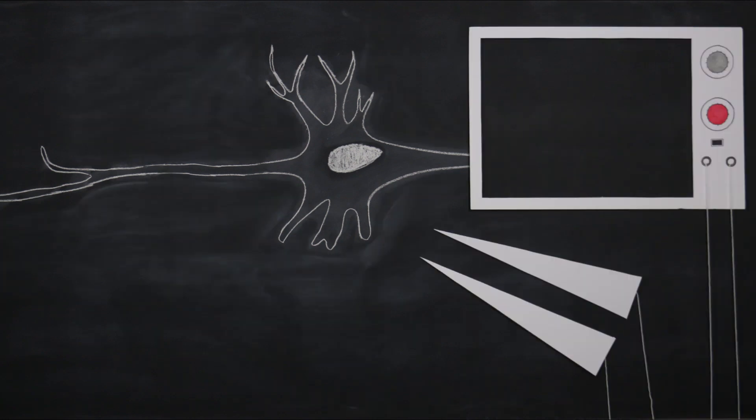One means by which signals can traverse the space of a single neuron is through local changes in a cell's membrane potential.